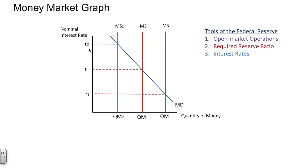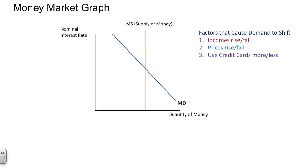Fundamentally, the Federal Reserve has three tools at their disposal. They can engage in open market operations, they can change the required reserve ratios of the banking system, or they can adjust interest rates — which, in some ways, is married to the first. Either way, if the Federal Reserve chooses to increase or decrease the money supply, this will have an effect on the nominal interest rates in the market.